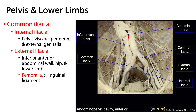The abdominal aorta bifurcates into the common iliac arteries at approximately the level of the fourth lumbar vertebra. Each of those common iliac arteries will then shortly thereafter bifurcate into the external iliac artery and the internal iliac artery. The external iliac artery runs under the inguinal ligament to become the femoral artery, which is the major source of blood for the lower limb.